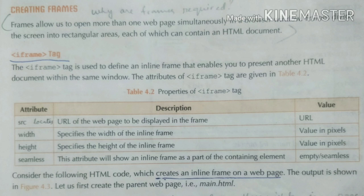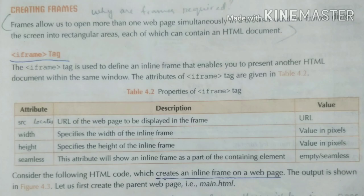The seamless attribute will show an inline frame as part of the containing element. Values are also given — you can go through one example given below. You can see the example here — it is given in the next page: main HTML, frame 1, frame 2. You can open your book to page numbers 80 and 81 to see how the frame is created.